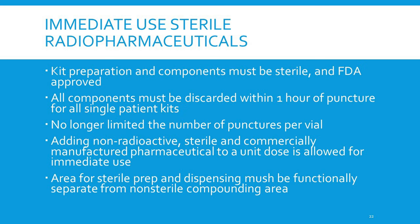Kit preparation components must be sterile and FDA approved. All components must be discarded within one hour of puncture of a single patient kit. USP 825 no longer limits the number of punctures per vial — that was USP 797, which only allowed one puncture per vial. Adding non-radioactive, sterile, commercially manufactured pharmaceuticals to the unit dose is allowed for immediate use only. The area for sterile prep and dispensing must be functionally separate from non-sterile compounding areas — a big requirement that most facilities are having issues with.